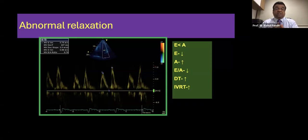Obviously the ratios have reversed. So E upon A ratio goes down. Your deceleration time and your isovolumetric relaxation time, obviously because it's slowly relaxing now, your IVRT becomes slower and slower. So it becomes longer.